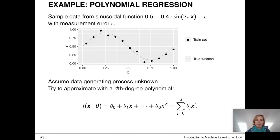Let's look at an example where we know the true data generating process. We sample some data from the function that's shown here. This is a sinusoidal function with some measurement error epsilon. So we know the true function is sinusoidal and it's shown here in gray in the graph.